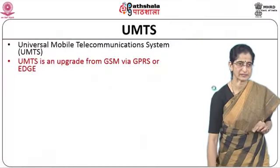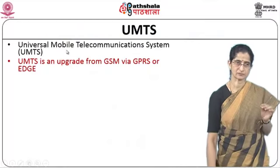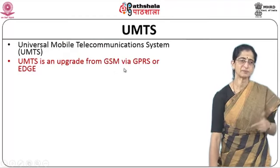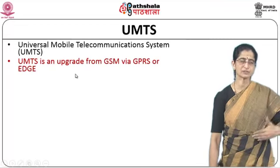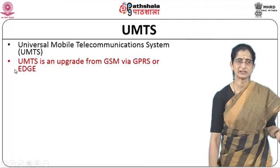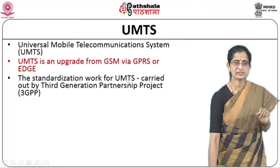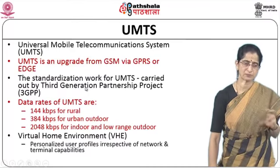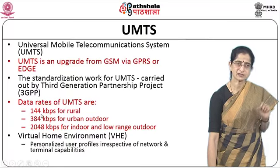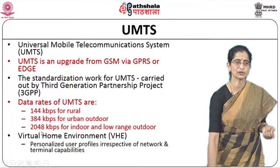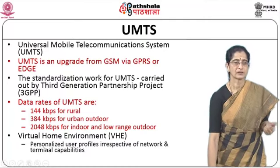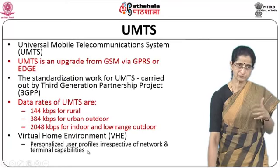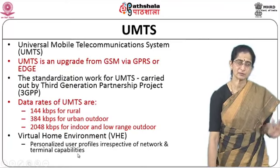UMTS stands for Universal Mobile Telecommunication Systems. It is basically an upgrade from GSM via GPRS or EDGE. The standardization for UMTS was carried out by the Third Generation Partnership Project — a consortium of industries responsible for the standardization. Different data rates are supported: 144 kbps for rural, 384 kbps for urban outdoor, and 2040 kbps for indoor and low-range outdoor. UMTS also supports a Virtual Home Environment, or VHE, which provides personalized user profiles irrespective of the network or terminal capabilities.